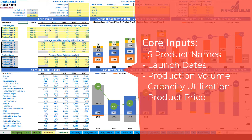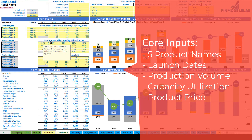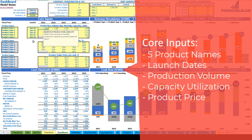The next step is to set up your production volume — maximum monthly capacity in units. This means that in 2021 for product type one you can produce a maximum of 1,000 units per month. You will not always produce at maximum capacity, so there is a monthly capacity utilization percentage, by product types and by years. For example, if you put 80%, it means that for 2021 on average you'll produce 800 units per month instead of the maximum 1,000.